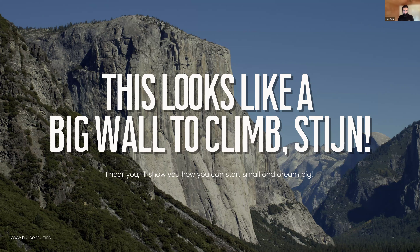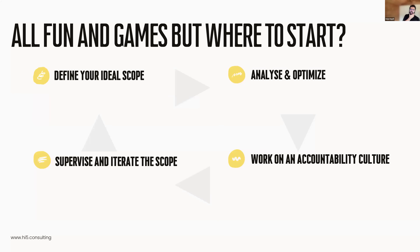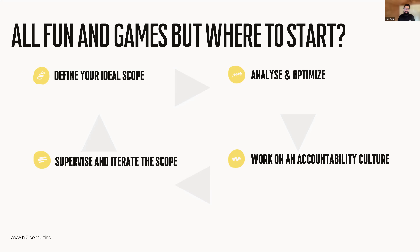Where do you start? Every customer is different, but there's a circular process: define your scope, analyze it, optimize it, work on accountability culture, supervise, then iterate on your scope and go around again. It's a merry-go-round you go through multiple times.